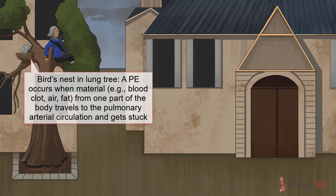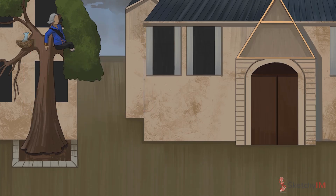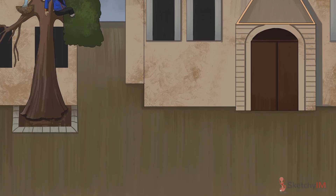The most common material that causes PE is a blood clot, also known as a thromboembolism. But other types of emboli exist, such as fat and air emboli.